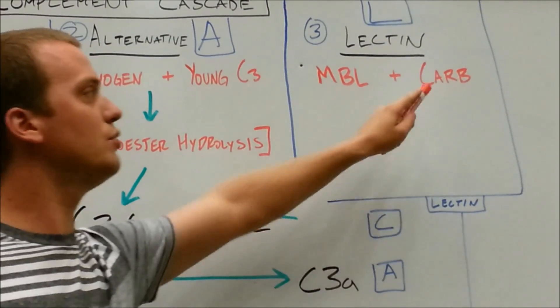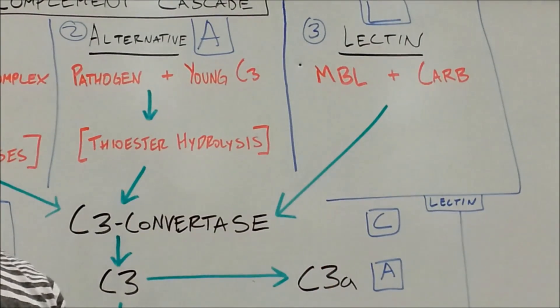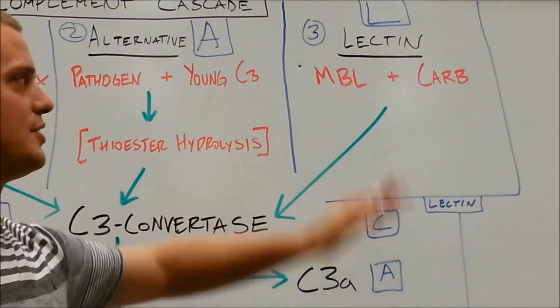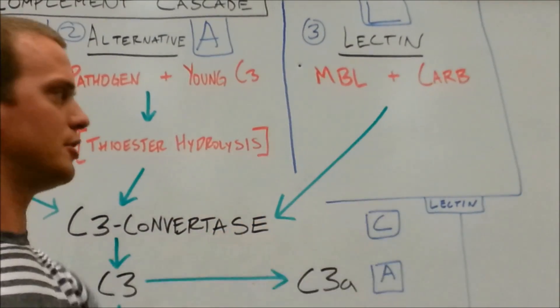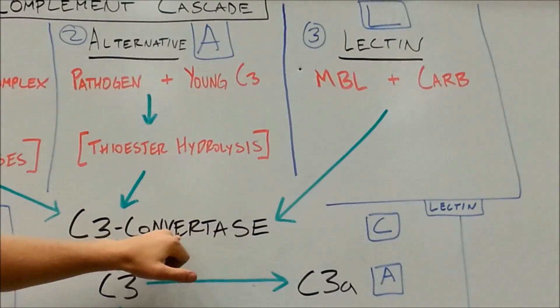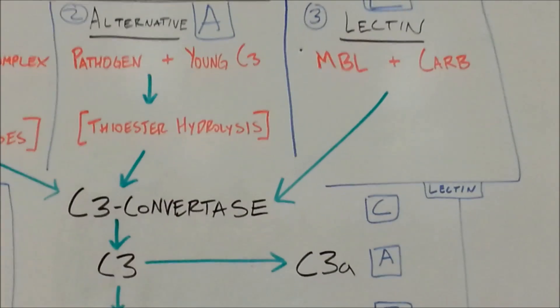Mannose binding lectin binds to a mannose, a carbohydrate. It can also bind to glucose, some other varieties of simple carbohydrates. But usually, as the name says, it's going to be mannose. Sometimes it will be glucose. Once that complex gets together, it gets activated, sends you down here, turns into and activates C3 convertase.